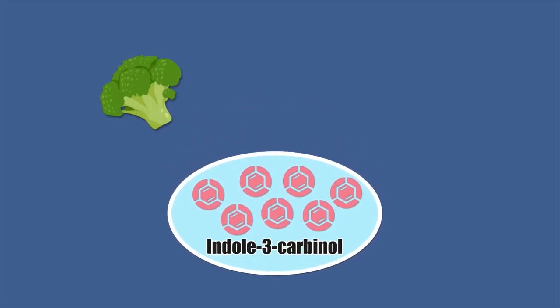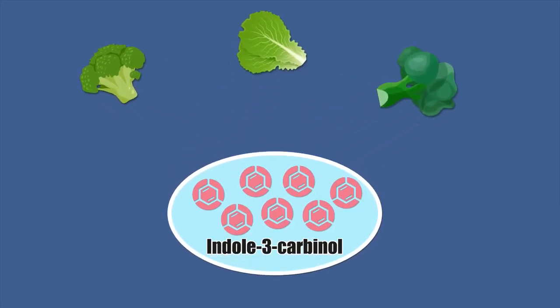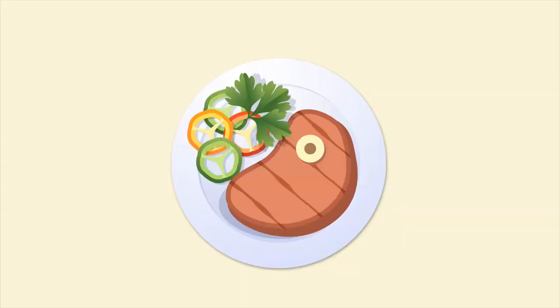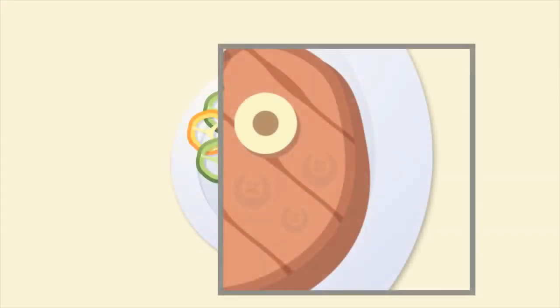Indole-3-carbinol is a phytochemical found in broccoli, mustard greens, and kale. It helps break down a cancer-causing estrogen precursor found in meat into a harmless form of estrogen, thereby preventing various estrogen-related cancers.